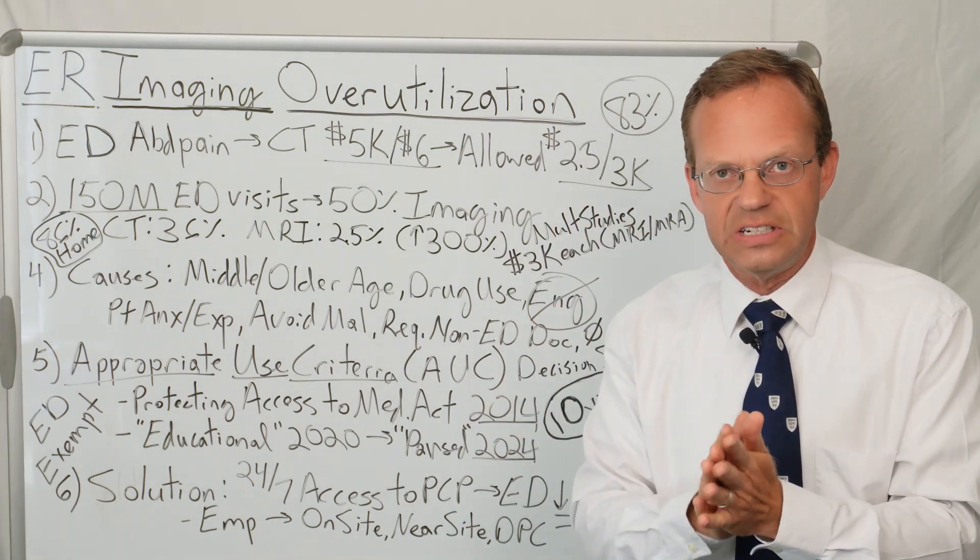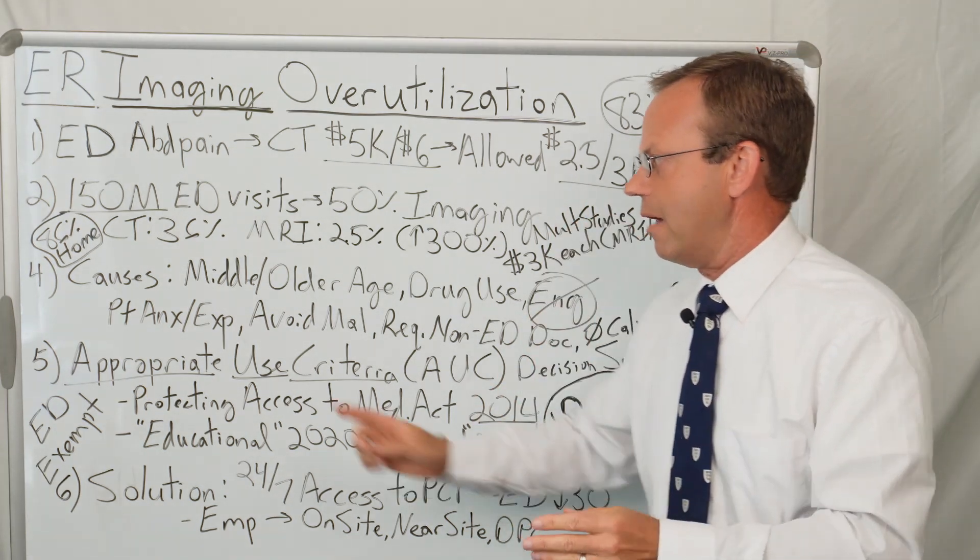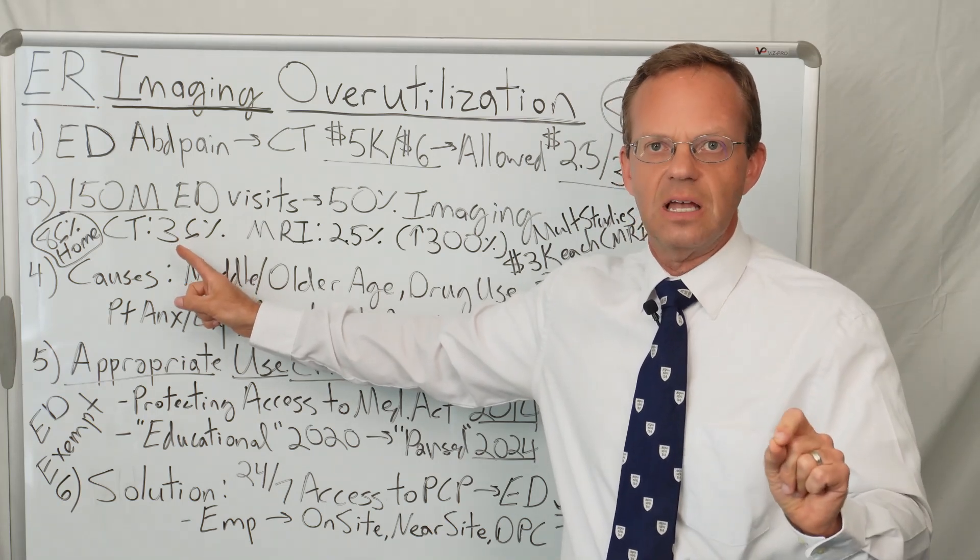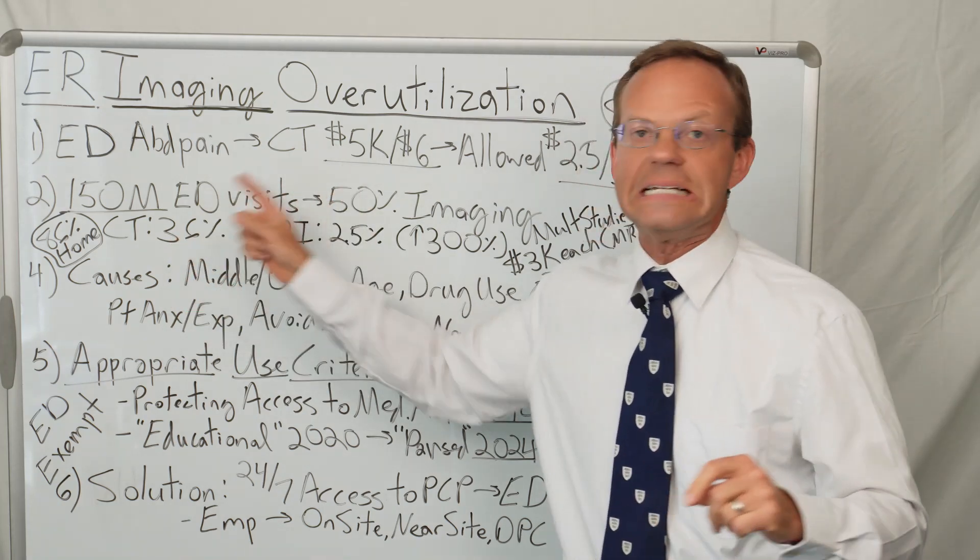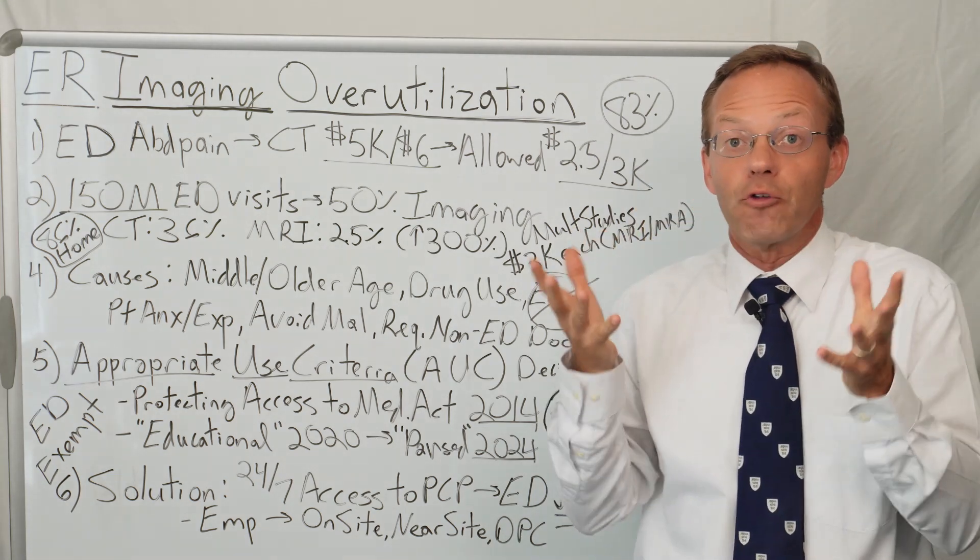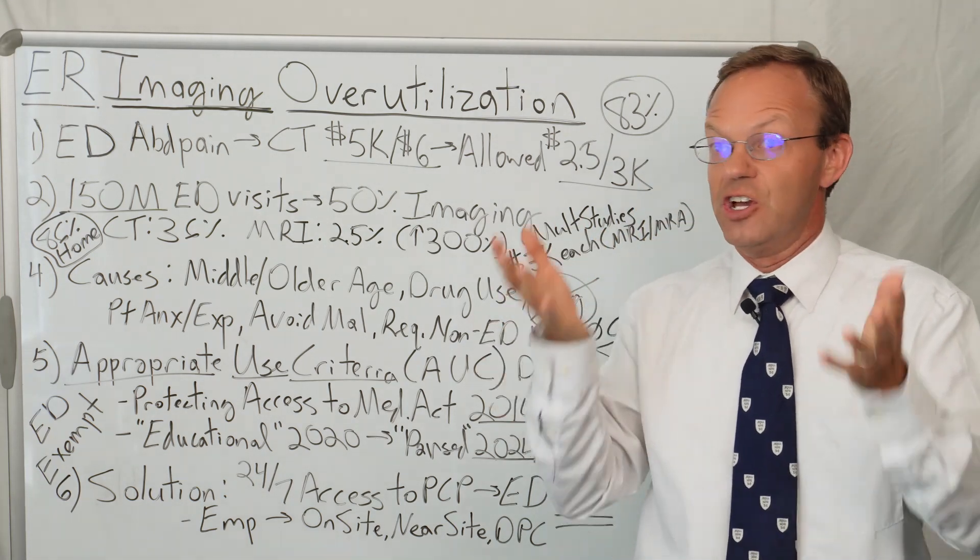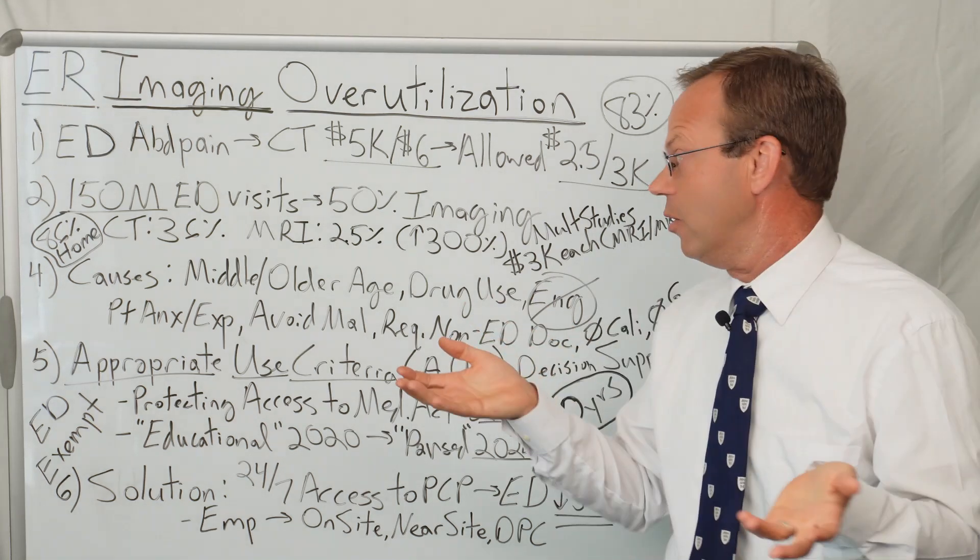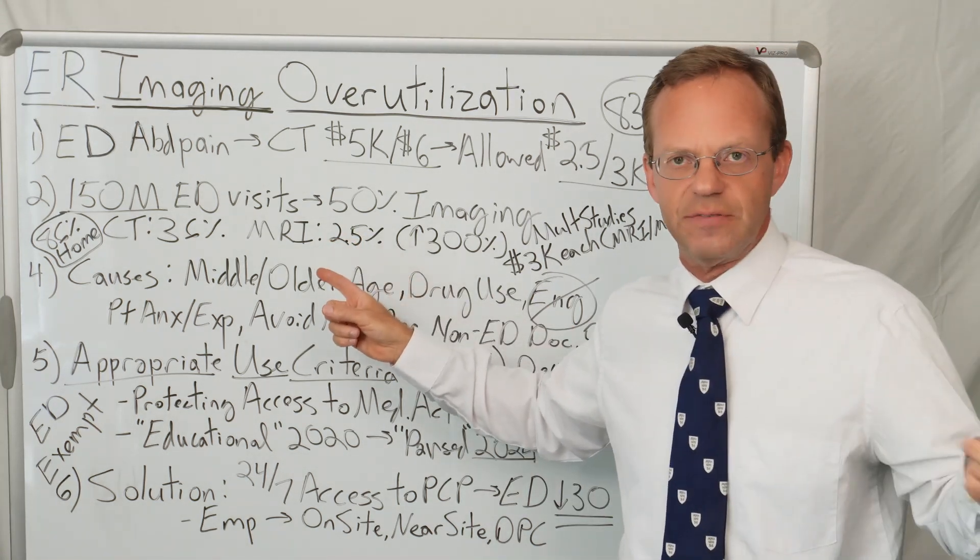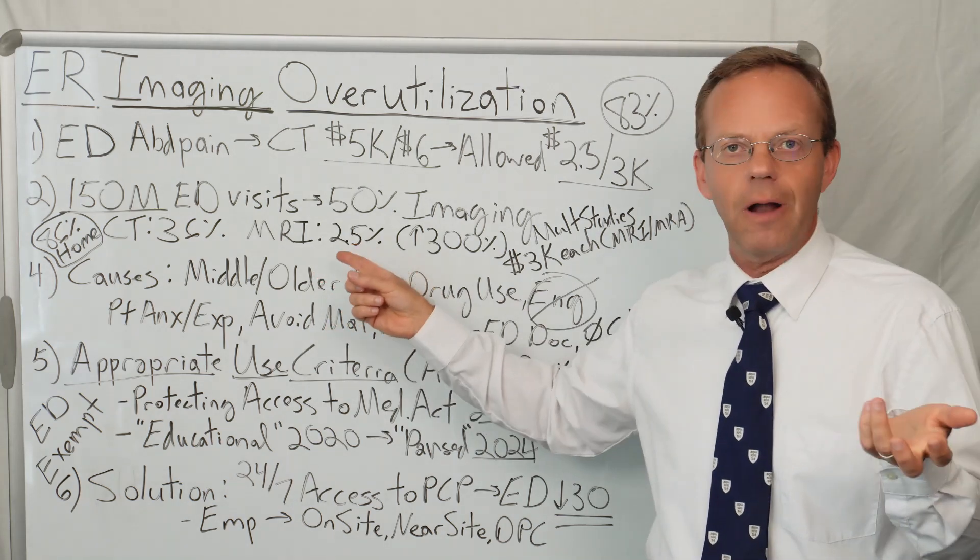How frequent are the CT scans and MRIs? It turns out that 36% of ER visits have an associated CT scan. That means if you go into the ER, there is over a one-third chance you're going to get a CT scan. And for MRIs, 2.5% of ER visits have an associated MRI.